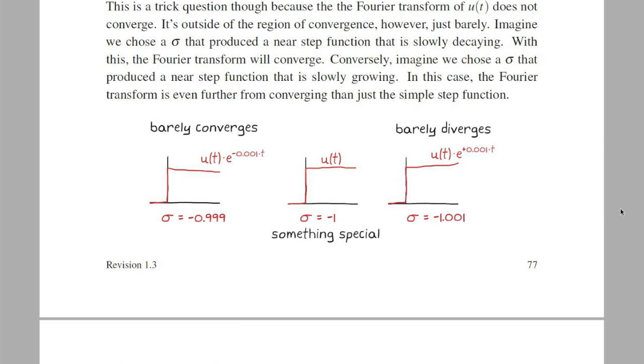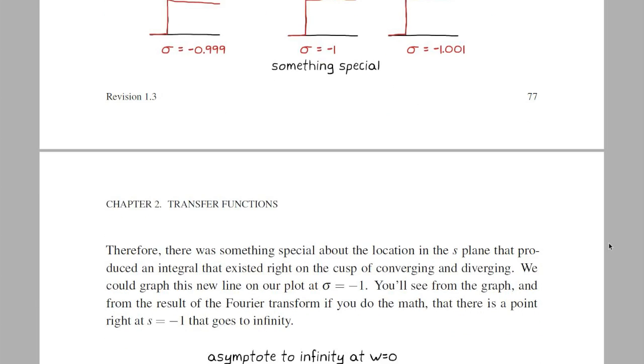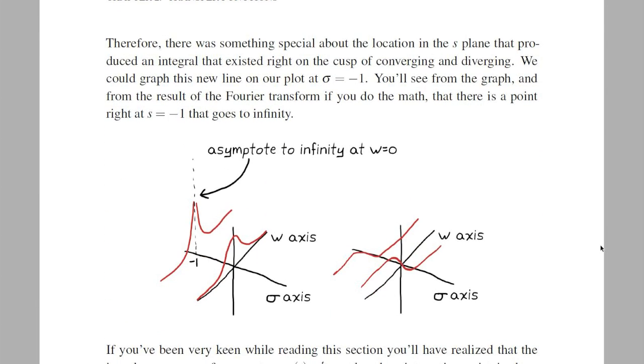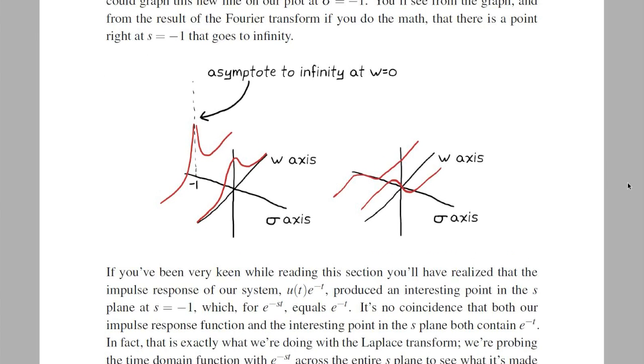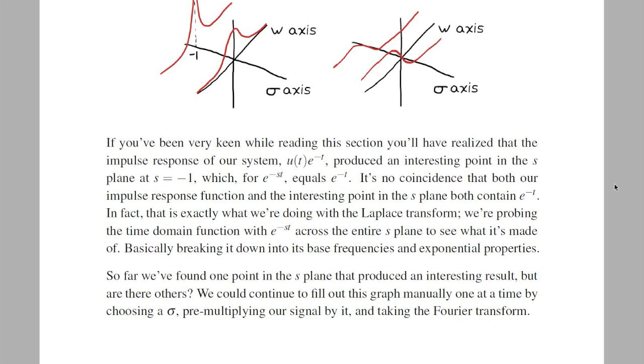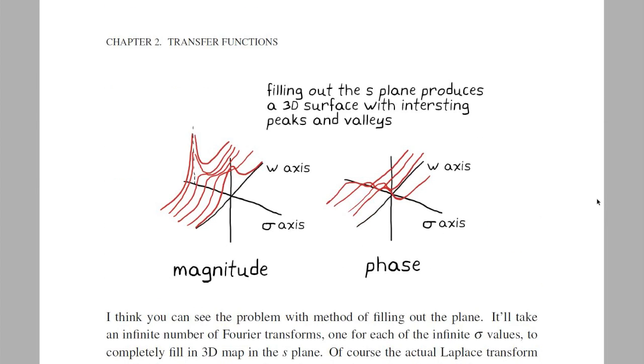Actually it's right on the cusp of this region. You can see that by choosing sigma values on either side of minus 1, and see that on one side it converges, and on the other side it definitely doesn't converge. So there's something special about the location in the s-plane that produced a value that was just exactly infinity. And that point is right at s equals minus 1. And it's no coincidence that both our original time domain function and the interesting point in the s-plane both contain e to the minus t. That is exactly what the Laplace transform is doing. It's probing our original function with every possible s across the entire plane to see if there is anything interesting there.